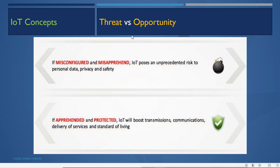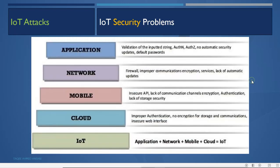Regarding threats versus opportunities: if misconfigured and unprotected, IoT poses an unprecedented risk to personal data, privacy, and safety. If properly configured and protected, IoT will boost transmission, communication, delivery of services, and standard of living. The combination of network, mobile, cloud, and application equals IoT.